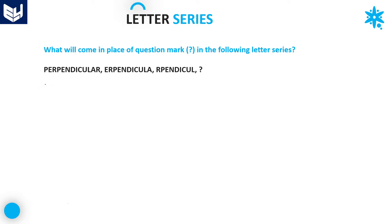Let's look at the first problem. The first word given is PERPENDICULAR. If you observe the second term, almost all the letters are the same except a few letters are missing. In the second term, two letters are missing: one is P and one is R. The first letter P is not there and the last letter R is not there in the second term.